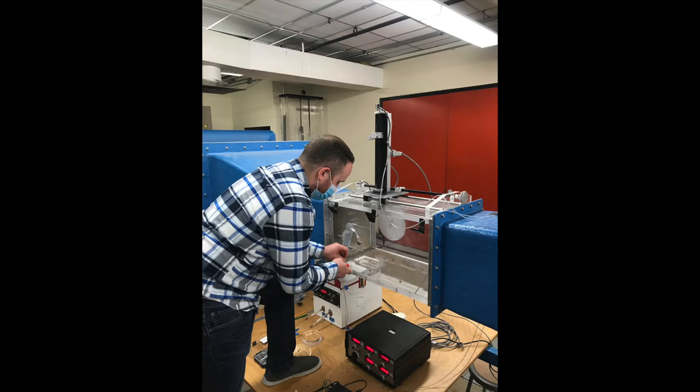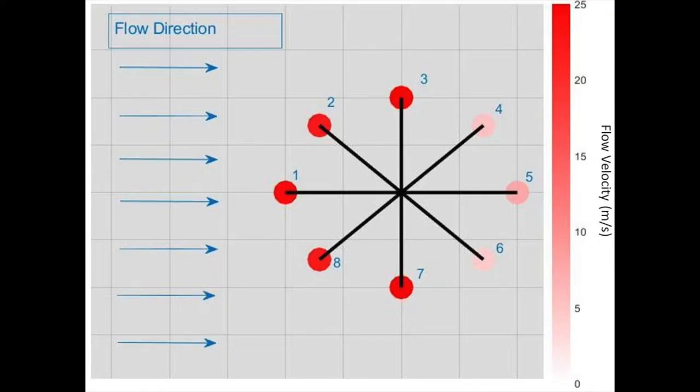Each pitot tube was individually tested against the wind tunnel's pitot tube, and the difference in measurements was negligible. The results from our prototype testing at a wind tunnel fan speed of 50 Hz is illustrated in this diagram. The magnitude of the flow speed measured by each pitot tube is indicated by the color bar. The results do make sense intuitively, as the pitot tubes facing towards the flow read the highest speeds, and those facing away from the flow read the lowest speeds.